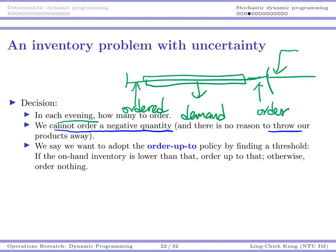We say that we want to adopt an order-up-to policy by finding a threshold. What does that mean? Every time when we make our inventory decision, we take a look at how many items I have on hand. If my on-hand inventory is lower than a certain threshold, I'm going to order up to that. Otherwise I don't do anything.